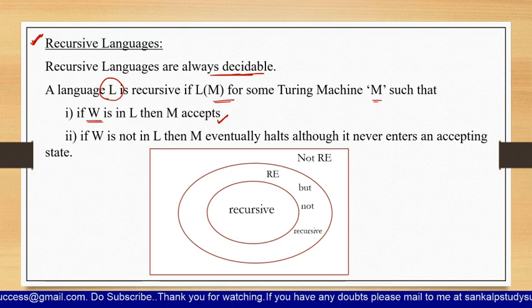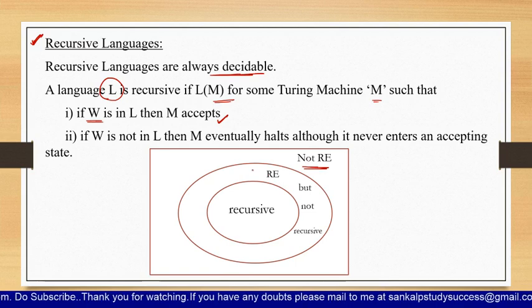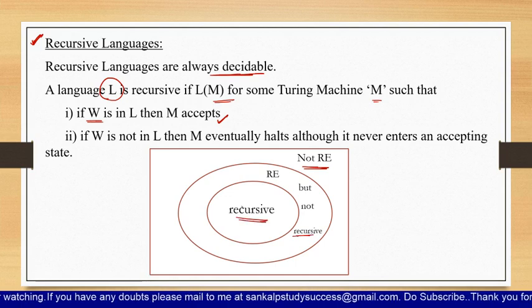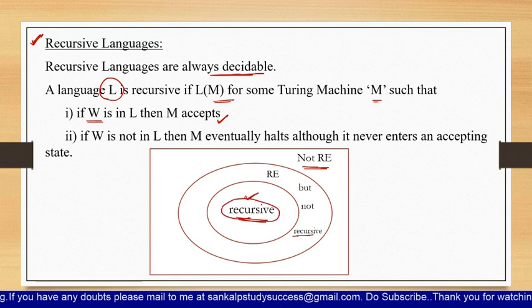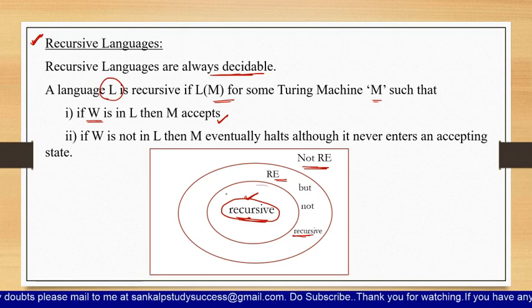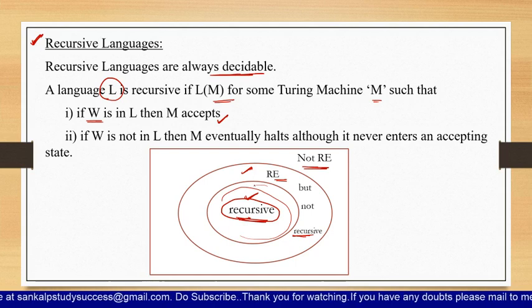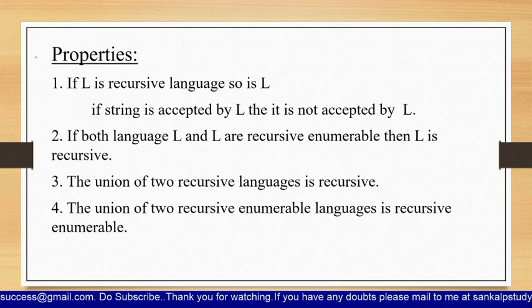In this diagram, the outer rectangle represents languages that are not recursively enumerable. The first inner circle represents recursively enumerable languages that are not recursive — meaning they are undecidable. The inner region represents recursive languages, which are decidable. So recursive languages are a subset of recursively enumerable languages — some recursively enumerable languages are decidable and some are undecidable.